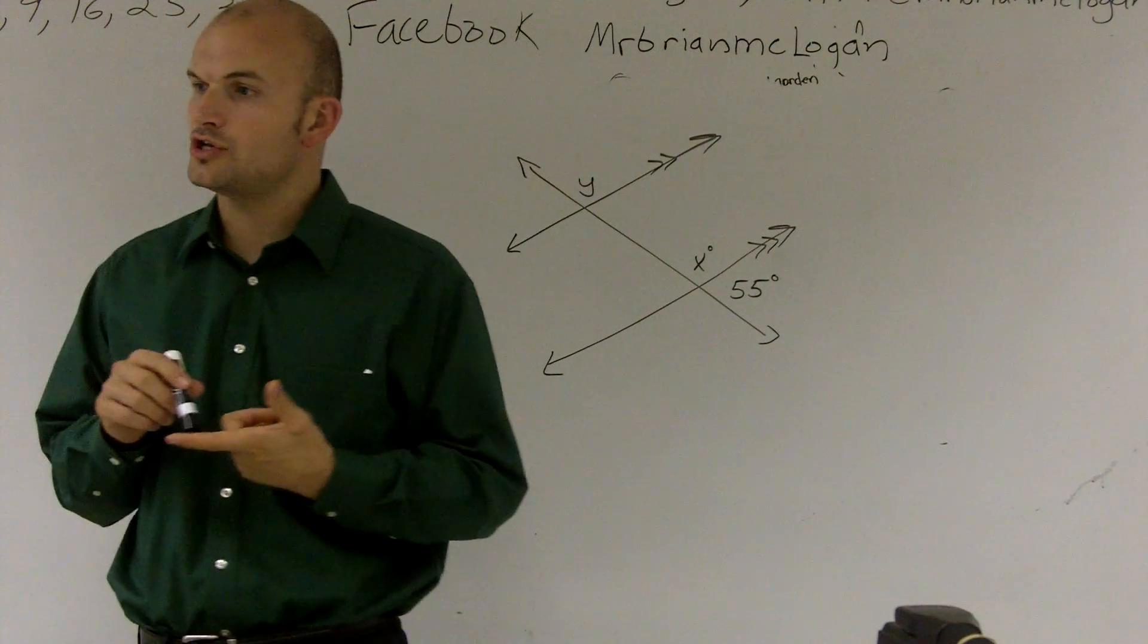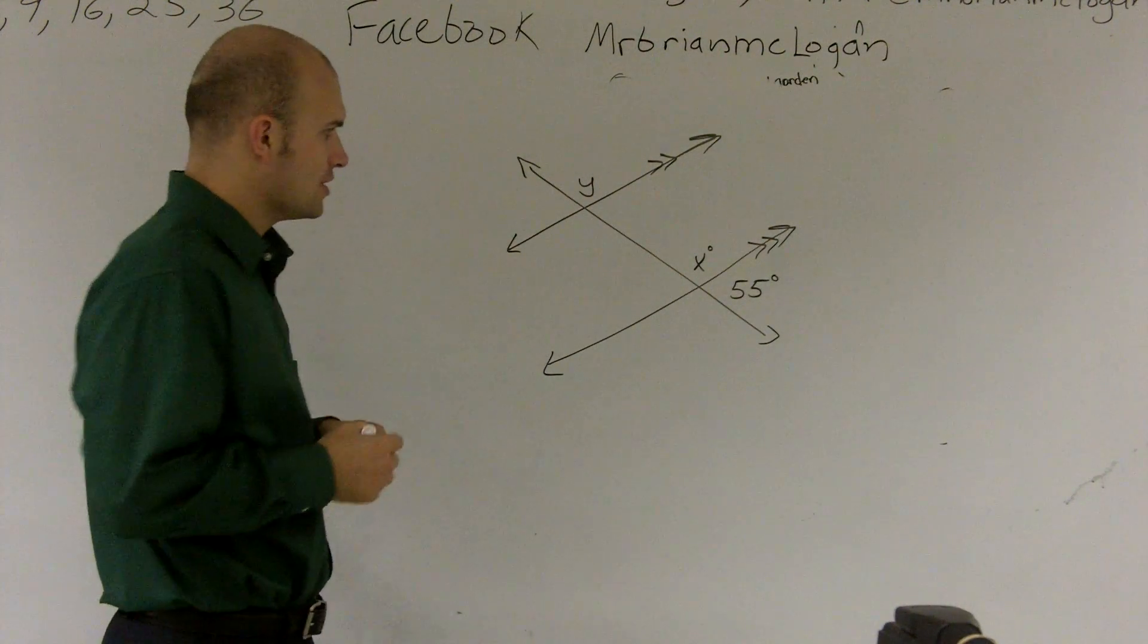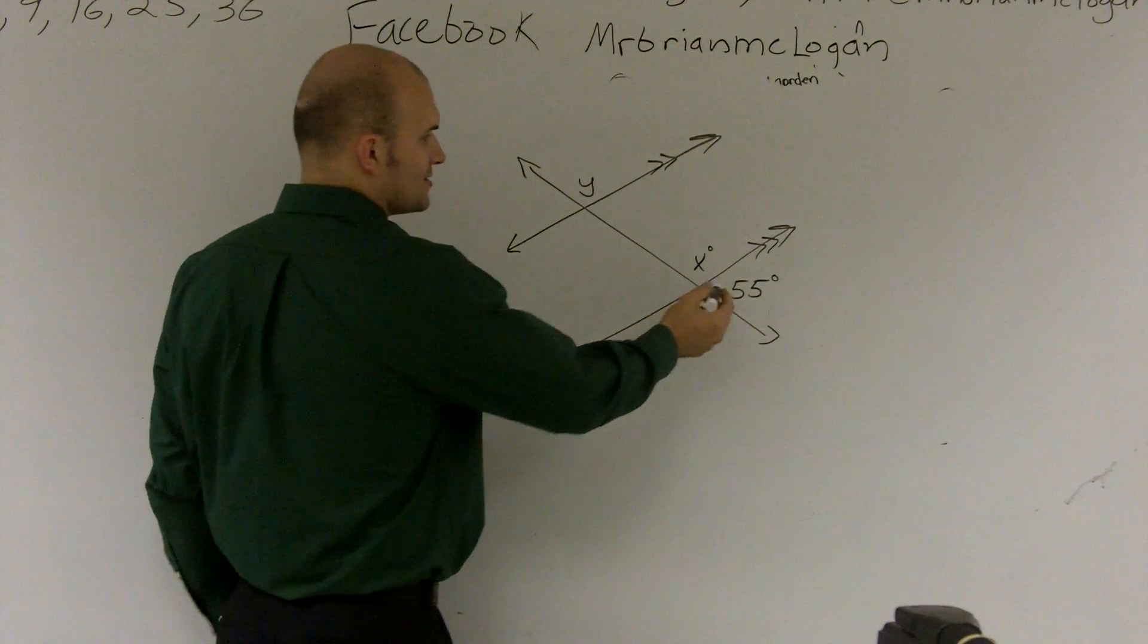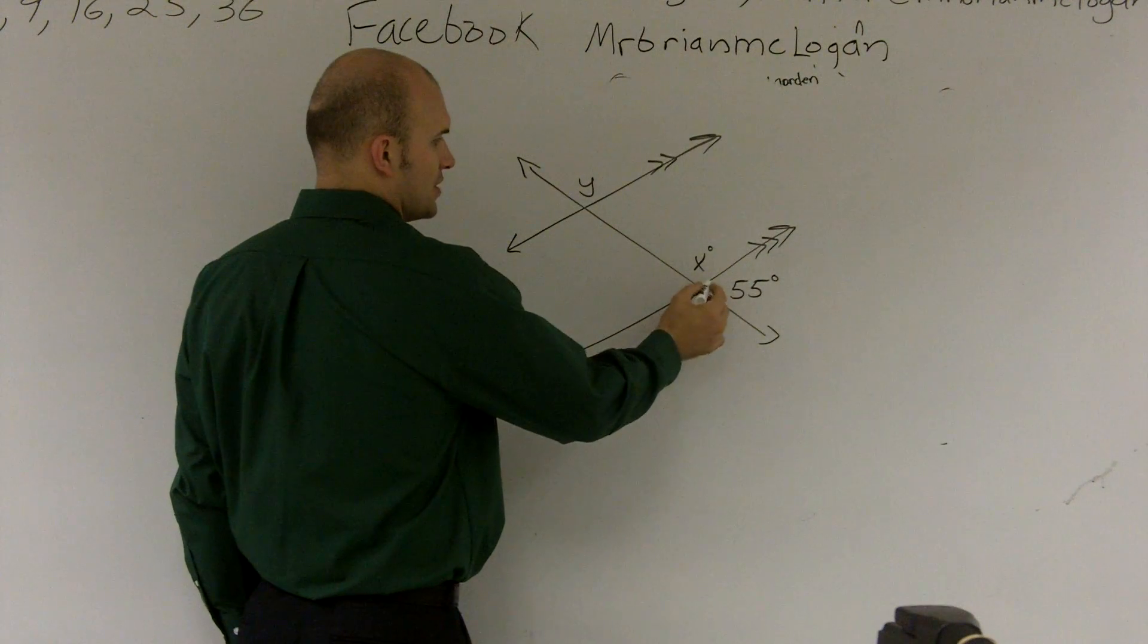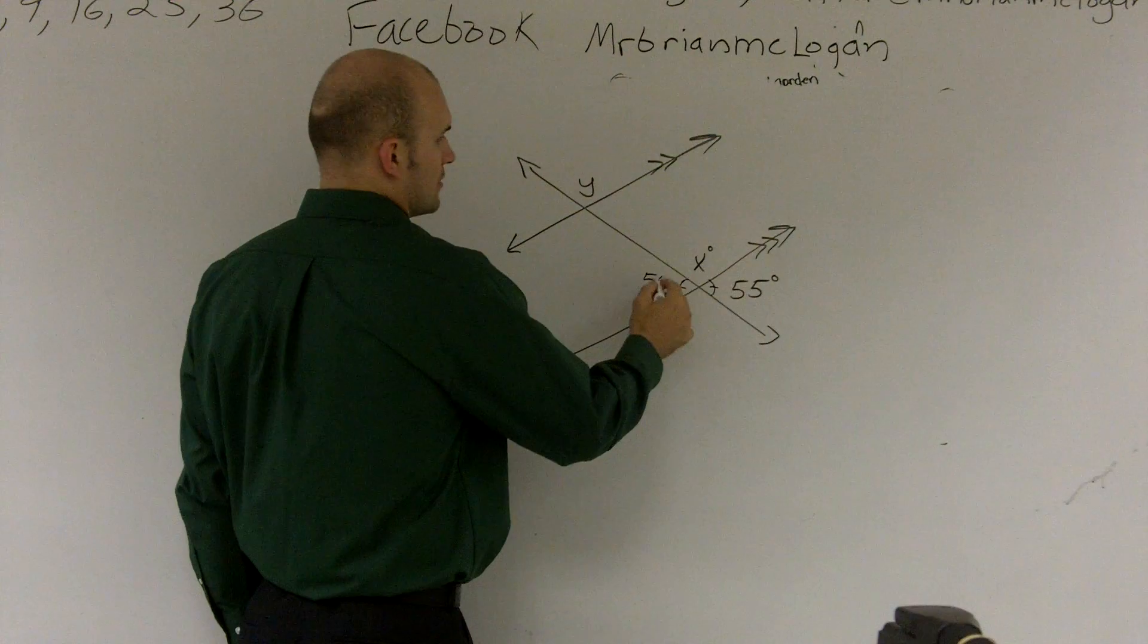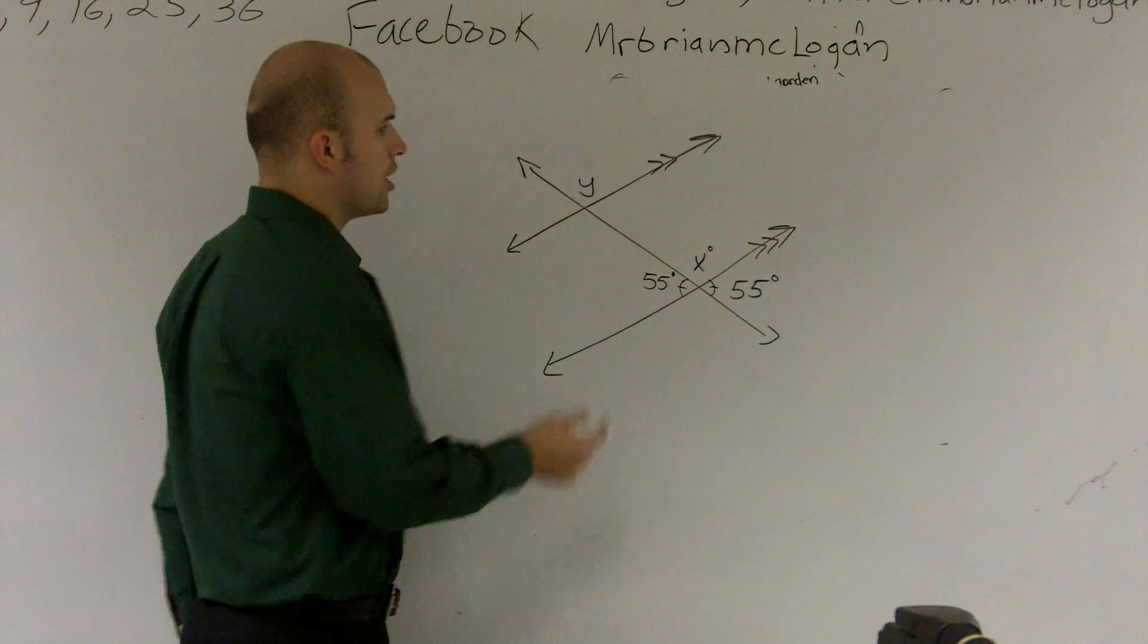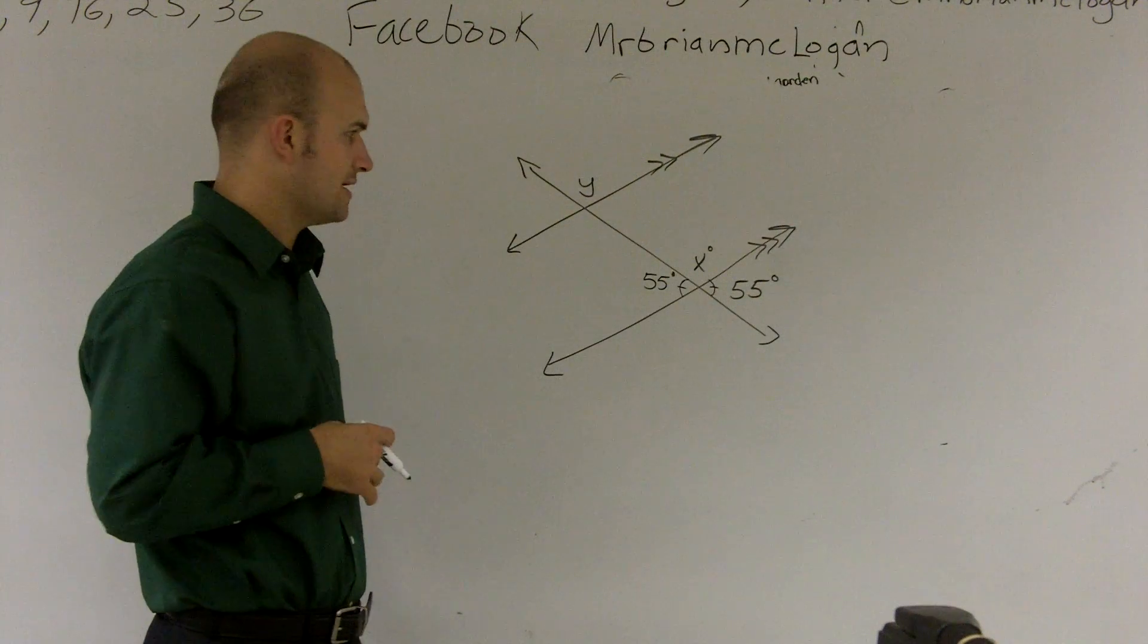So there's a couple things that we should know, first of all, and that we've already previously learned. One thing is we know that opposite angles are equal to each other. So this angle and this angle are equal by what we call vertical angles. So any opposite angles are also equal to each other by vertical angles.